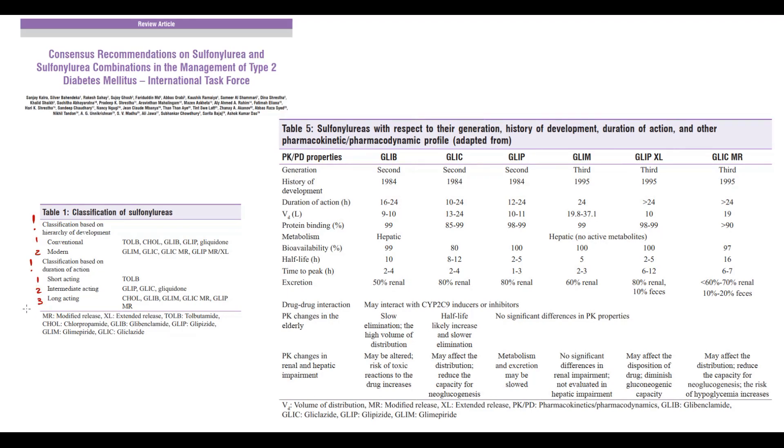On short-acting, intermediate, and long-acting. The most common conventional drugs are glibenclamide, gliclazide, and glipizide. They all belong to a second generation.